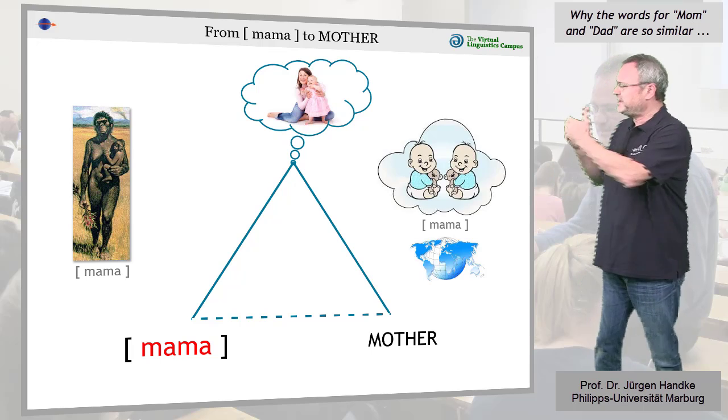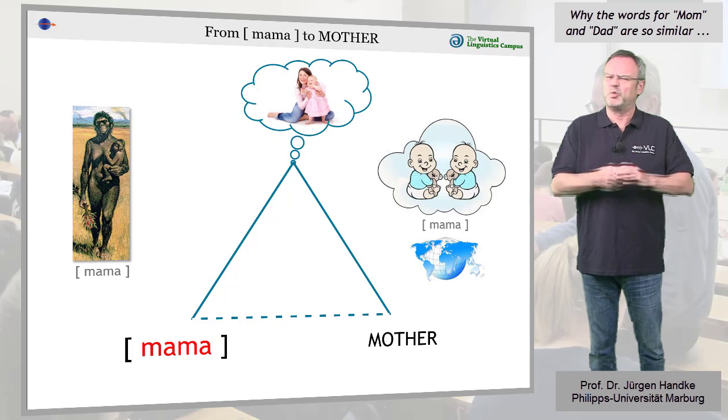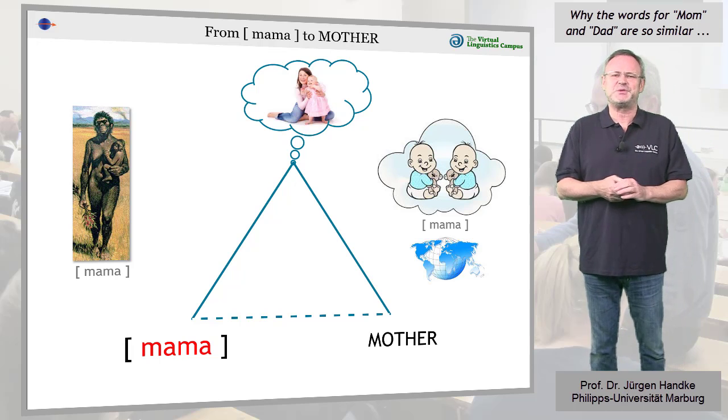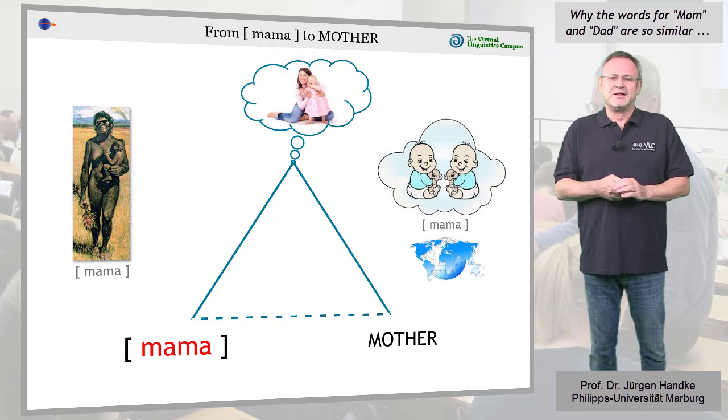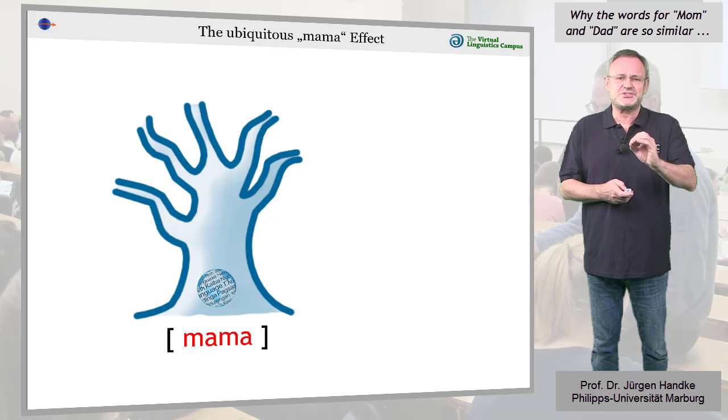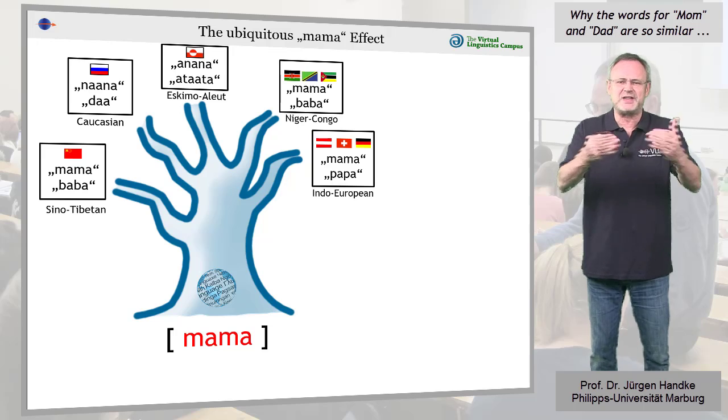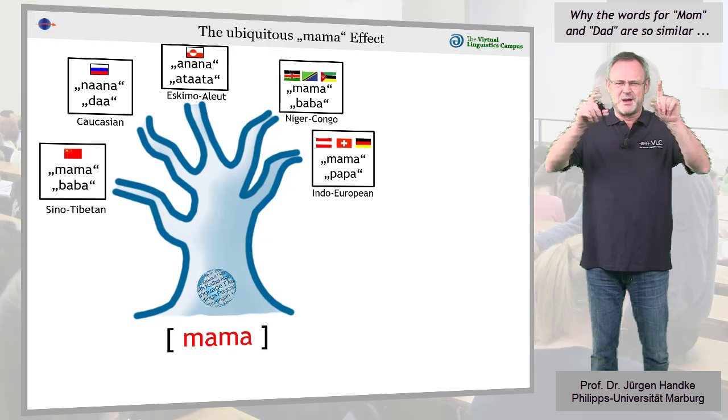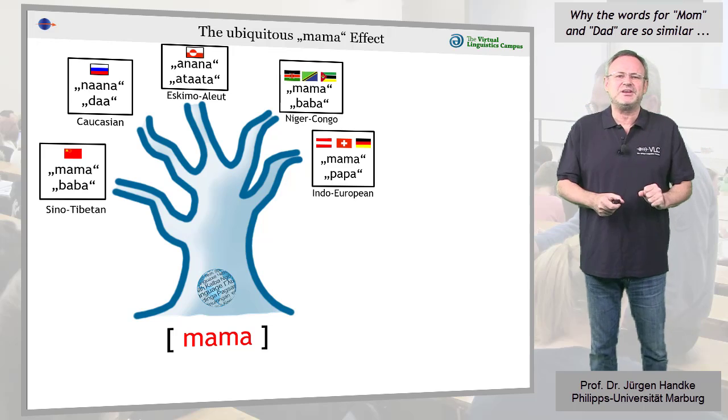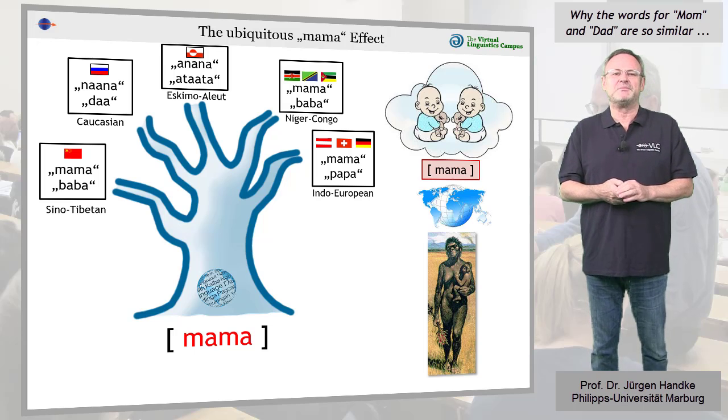But more to the point, it happens with baby humans worldwide today, whatever language they're speaking. That means that even as the first language was becoming countless others, this mama mistake resulted in mama becoming the word for mum time and time again, regardless of what was going on with all the other words.